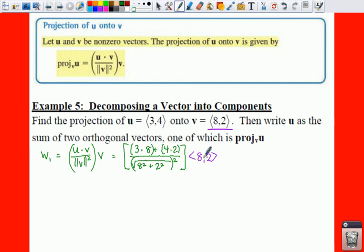If we have 24 plus 8, that's going to give us 32 over, well the square root of 64 plus 4 is 68, so the square root of 68 squared is just 68. We're going to have 32 over 68, and we're going to have to multiply this by your vector ⟨8,2⟩. Now remember you could simplify this 32 over 68, which if you divide each of this by 4, that's going to give you 8 over 17 times your vector ⟨8,2⟩.